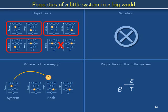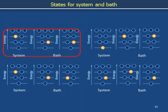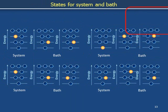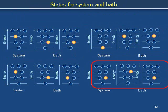In this module we analyze how the number of configurations of the overall world — comprising the system and the multipart bath — changes when we move energy from the system to the bath. Remember the big picture: we want to know how much time the world spends in various configurations with energy distributed in different proportions between the system and bath, because this allows us to know the typical amount of energy in the system and thus the system's typical states and physical properties.